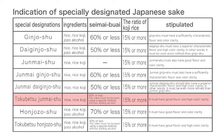Tokubetsu junmai-shu: the ingredients must be rice and rice koji. It must have a polishing ratio of 60% or less. This sake must be brewed using a special method without adding alcohol. It must have good flavor and high color clarity.